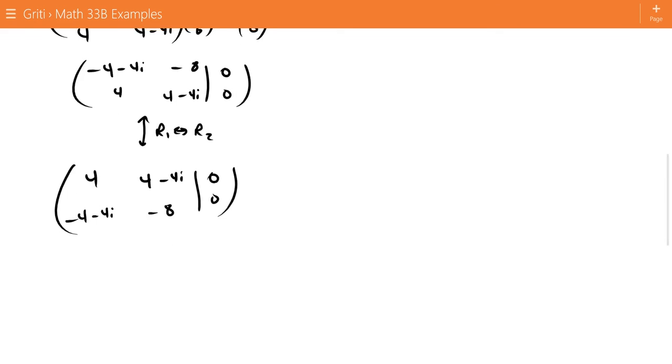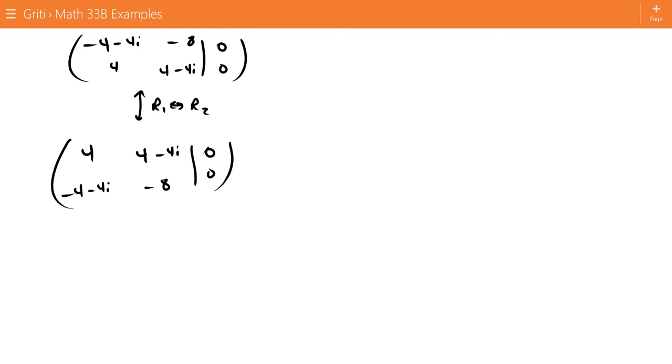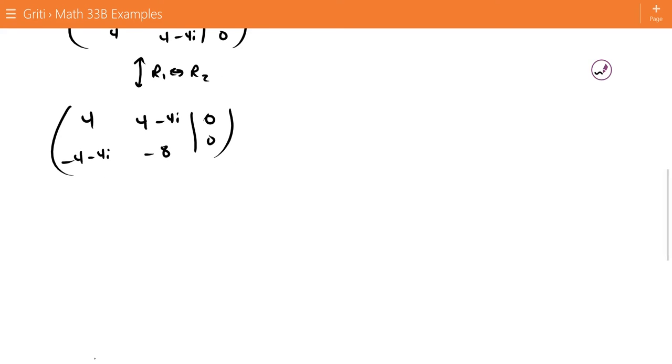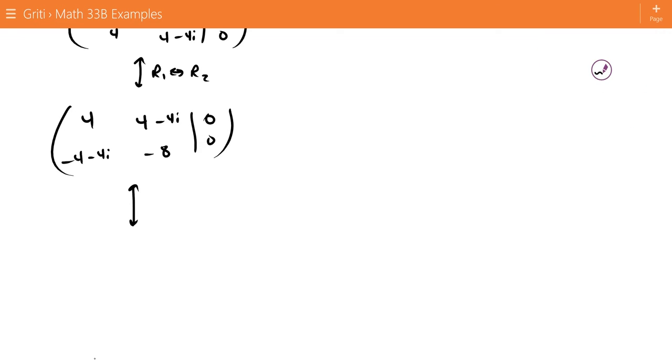For all these complex systems of equations, a little trick is you just need to look at the relationship between the two values of the top row. Let's do a little simplification, R1 divided by 4, which will give us 1 and 1 minus i.